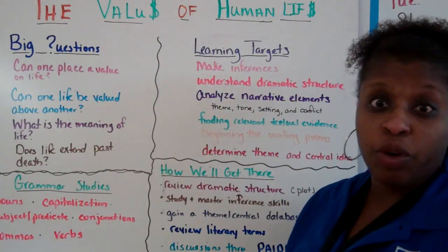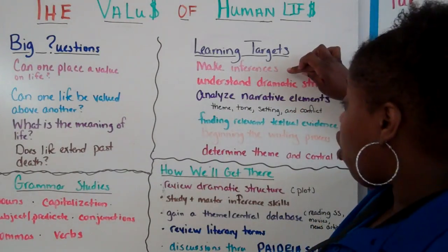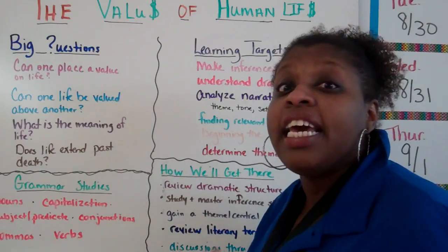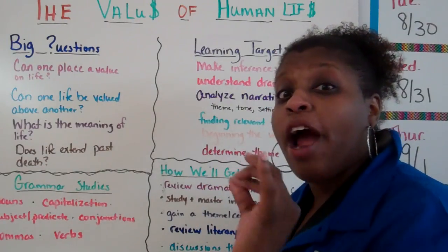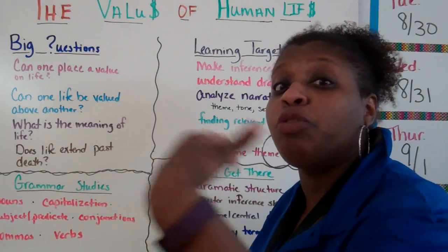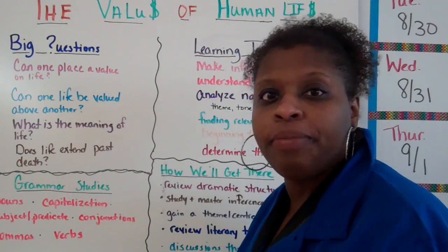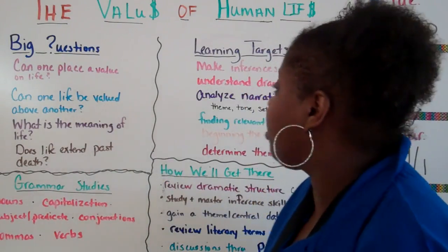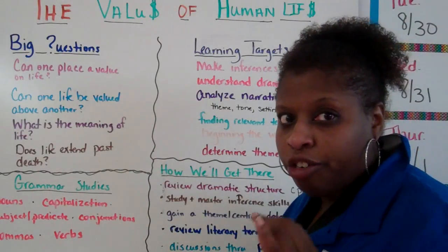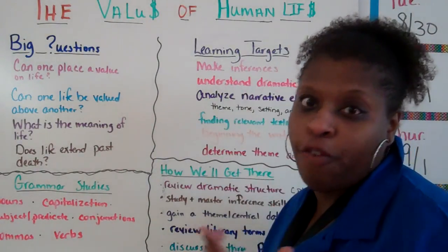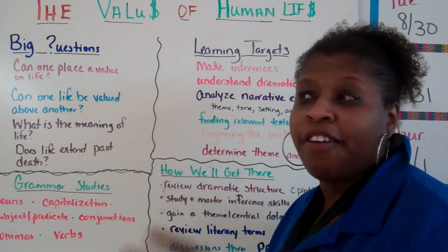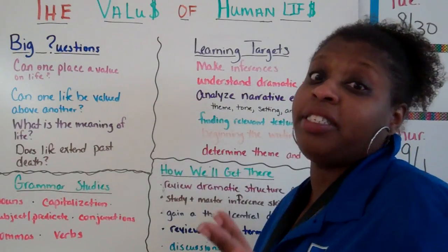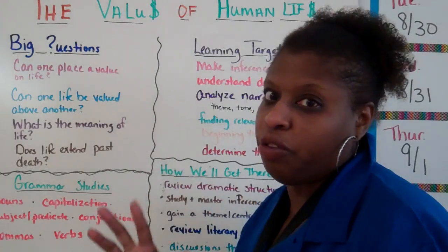Some learning targets we're going to focus on this unit. We're going to focus on making good inferences. An inference is prior knowledge plus information you glean or gather from the text — it's those little clues you find between the lines. We're going to learn how to understand dramatic structure in all forms of text: fiction, non-fiction, poetry, news articles, television shows, movies. We're going to do the whole game.